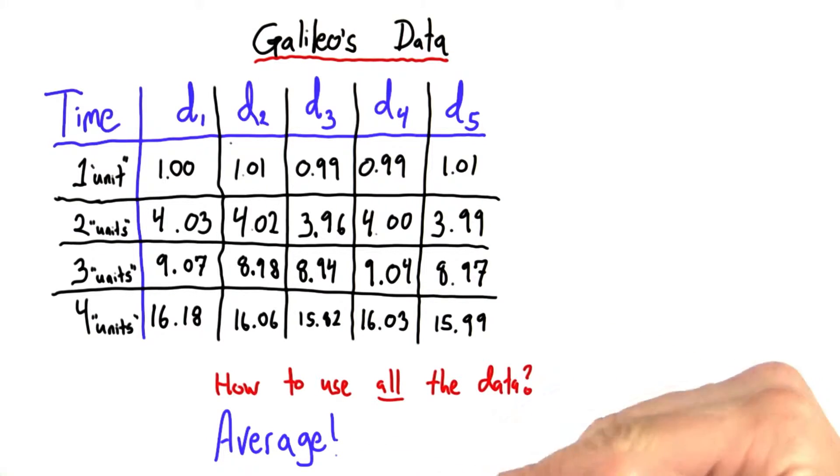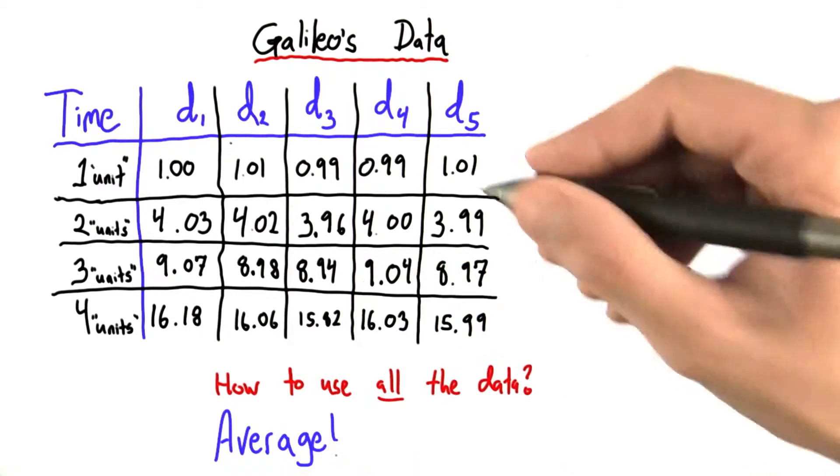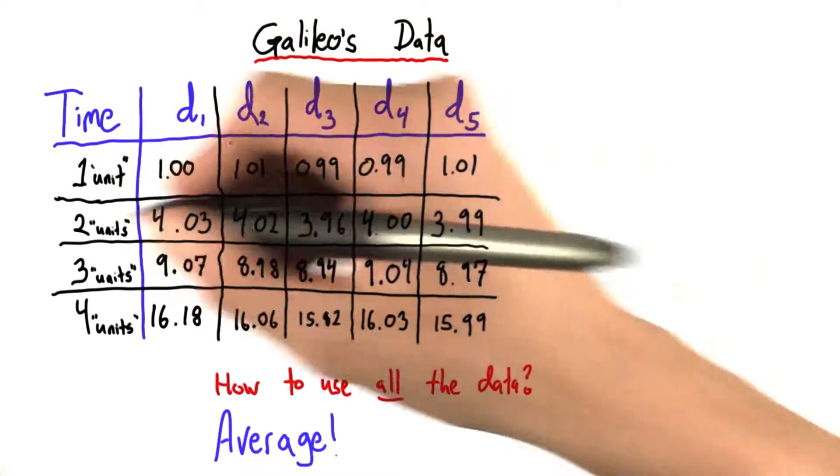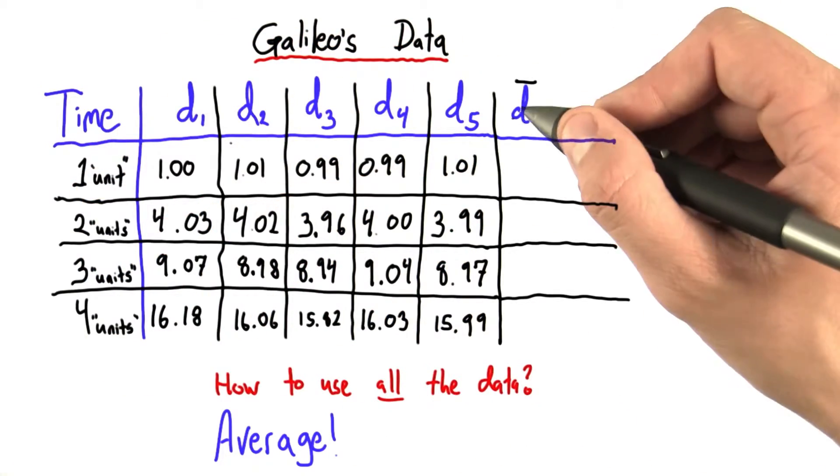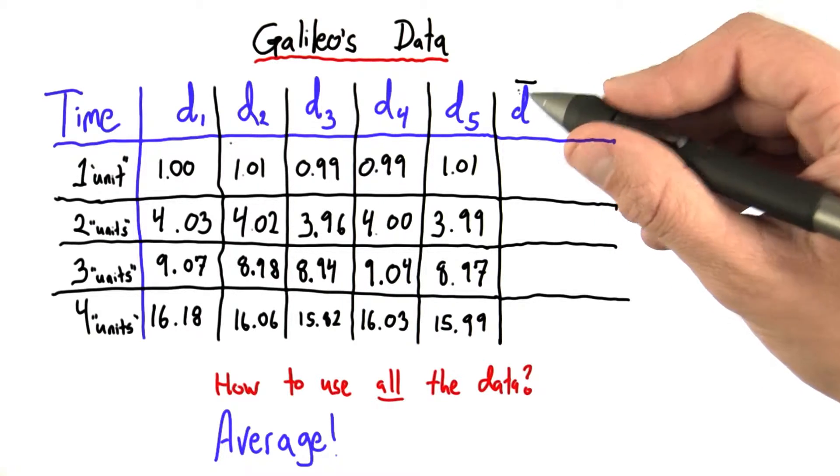Well the answer is he takes the average. And so I'll quickly review what an average is in case you've forgotten or if you don't know. To calculate an average, for example if I want to calculate the average distance rolled in each of these units of time, I've indicated average distance by a d with a bar over it. And in physics a bar over a letter generally means the average.